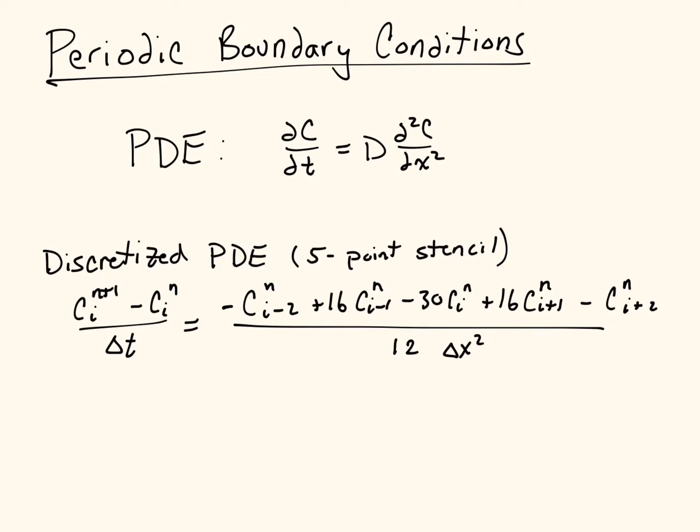We're going to use a more complicated discretization than we saw in class, mostly just to highlight the points of the periodic boundary condition. So here's our discretization. The periodic boundary condition is independent of discretization. The same ideas are applied to all discretizations. I thought this would be interesting because this uses two neighbors in each direction.